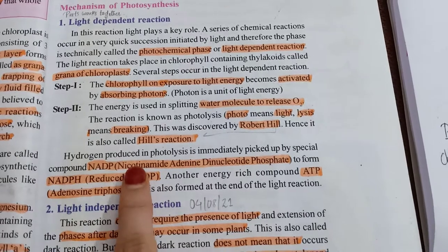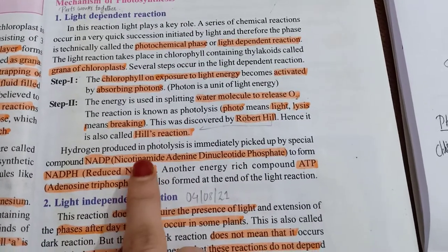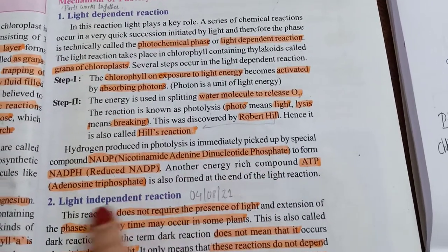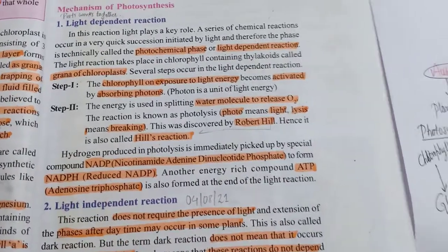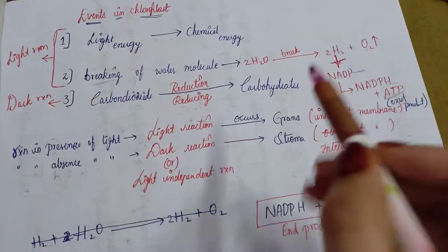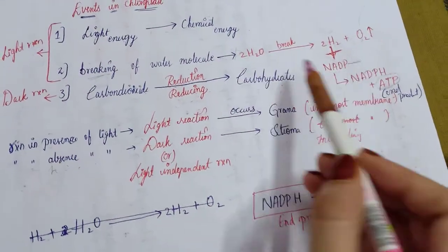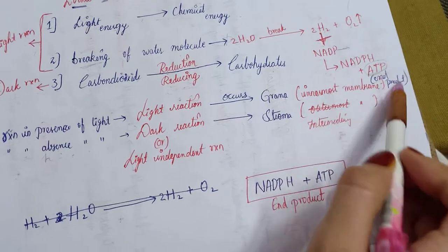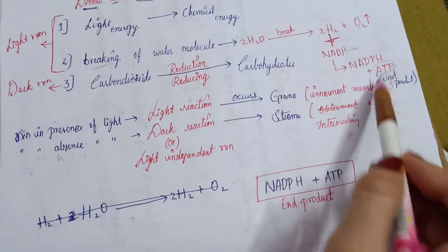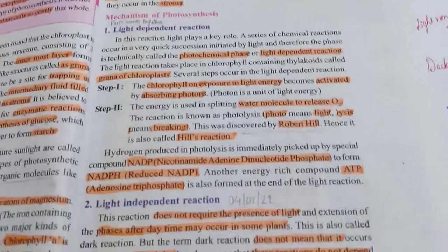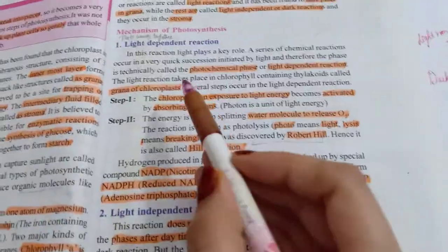NADPH stands for nicotinamide adenine dinucleotide phosphate, and ATP stands for adenosine triphosphate. As you can see in the chemical equation, the reaction takes water as input and produces NADPH and ATP as end products. With this, we have completed our discussion of the light reaction.